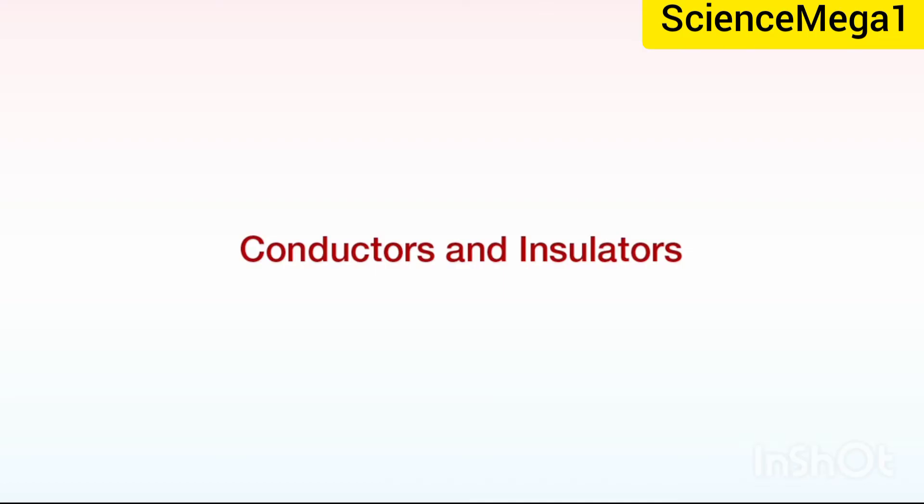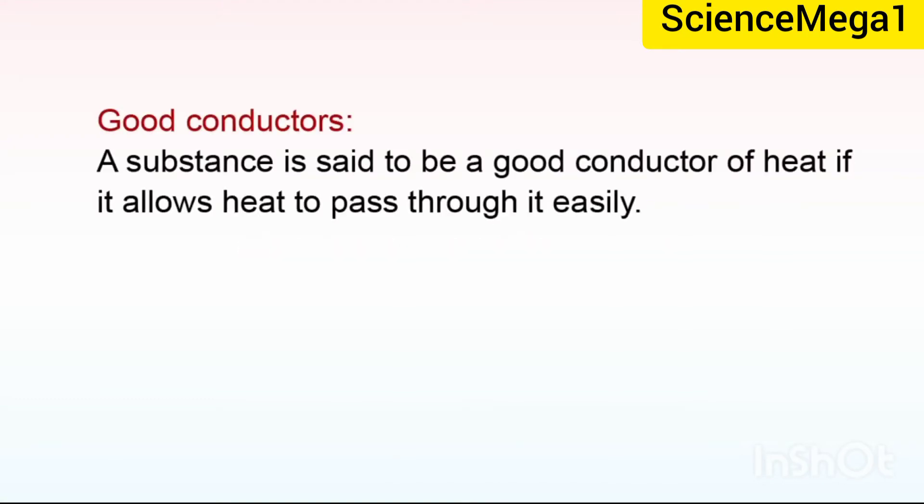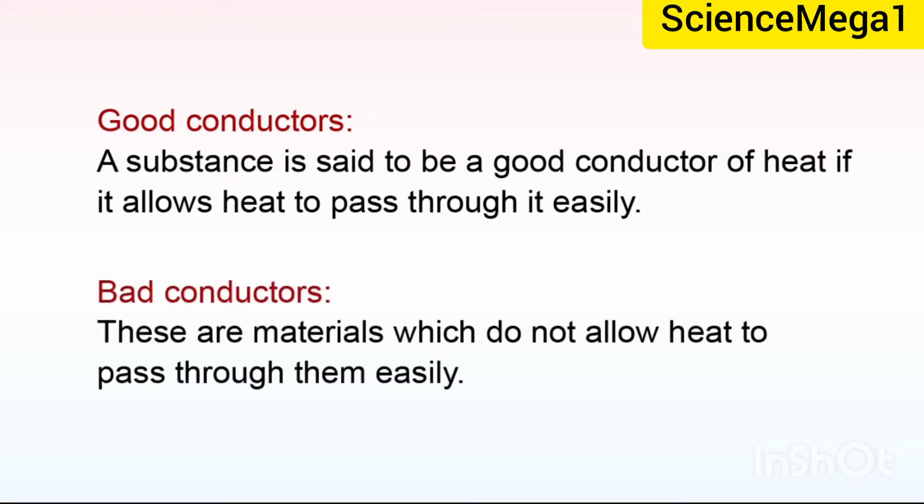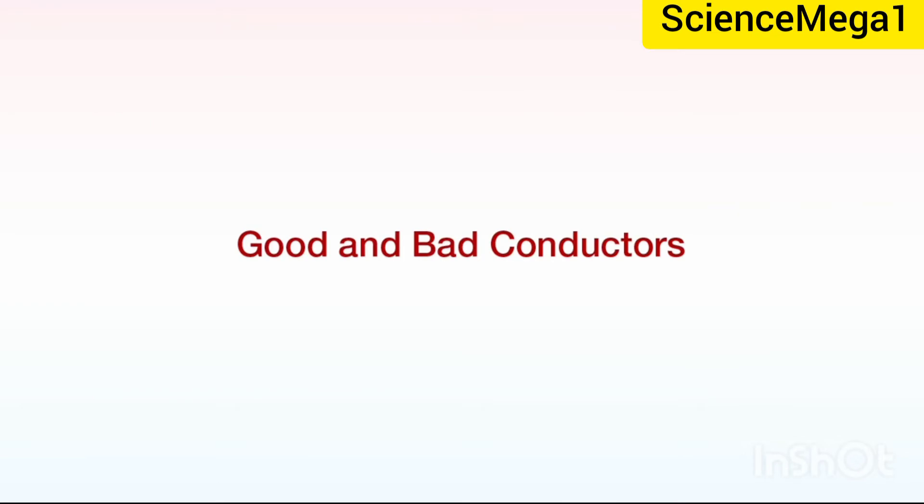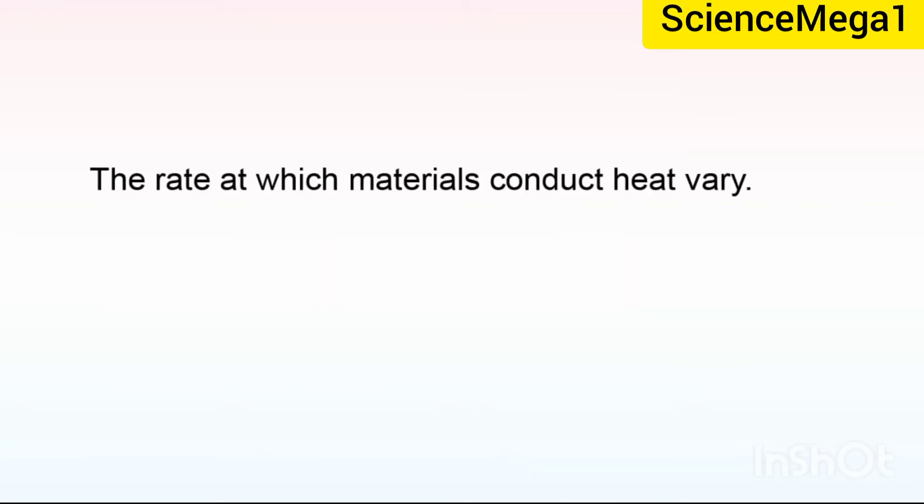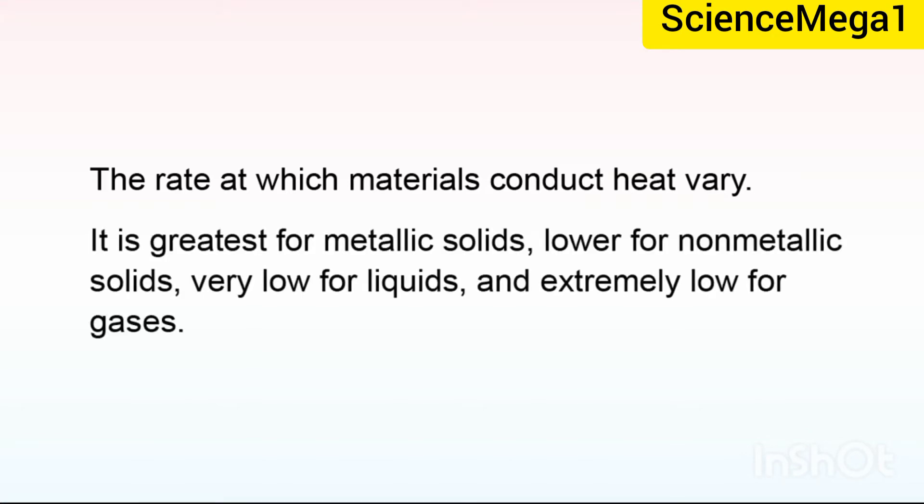Now let's look at conductors and insulators. A substance is said to be a good conductor of heat if it allows heat to pass through it easily. We also have bad conductors of heat. These are materials which do not allow heat to pass through them easily. The rate at which materials conduct heat vary. It is greater for metallic solids, lower for non-metallic solids, very low for liquids, and extremely low for gases.